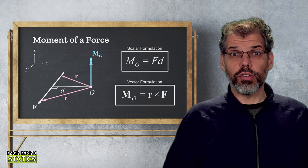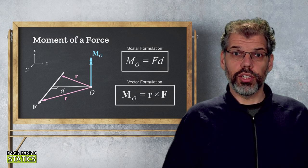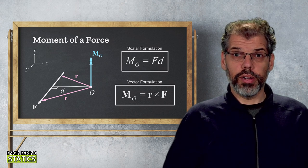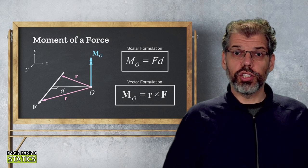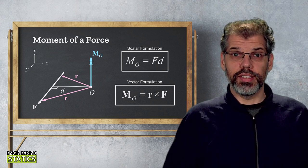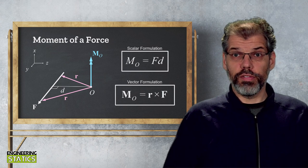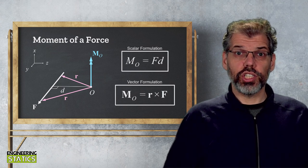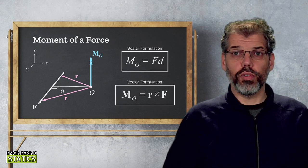Comparing this vector formulation to the scalar formulation of a moment, you may observe something a bit odd. In the scalar formulation, the moment is given as the force f multiplied by distance d, while for the vector formulation, it is the position vector r cross force f.